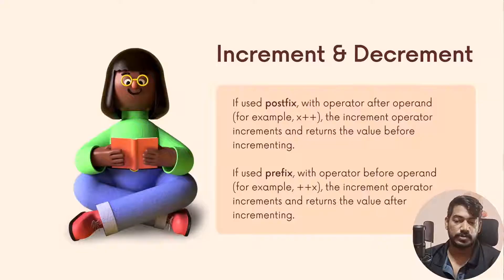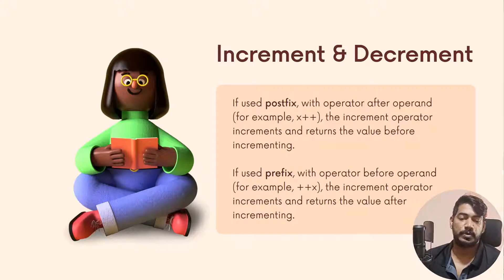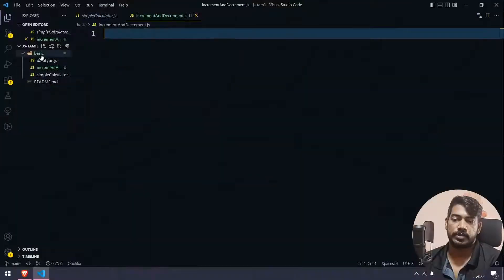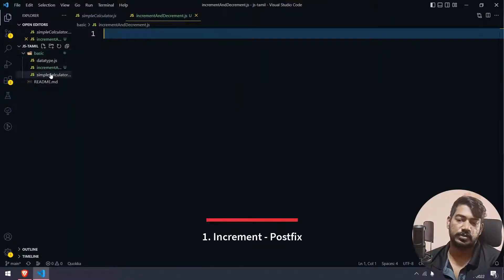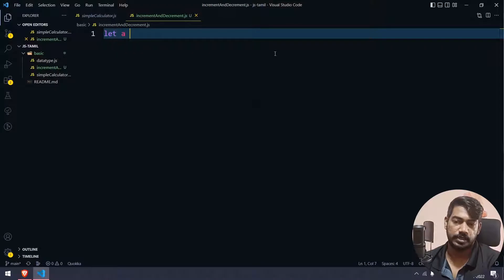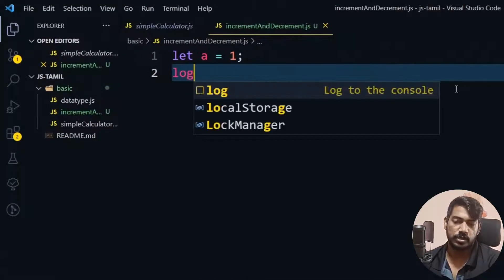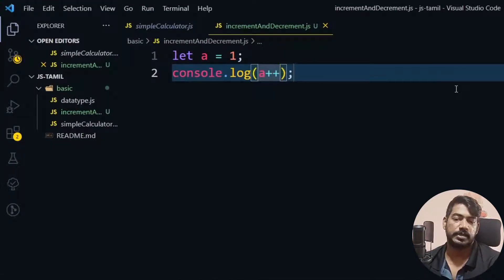We use increment and decrement by using postfix and prefix. Let's open the JavaScript basics folder and create an increment-and-decrement.js file. First, let a equal to 1. So the value of a is 1. Now if we do console.log(a++), that is postfix — variable plus plus.